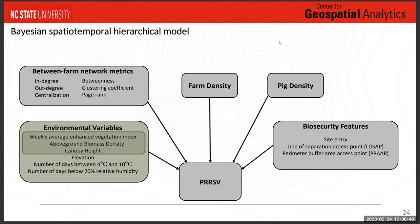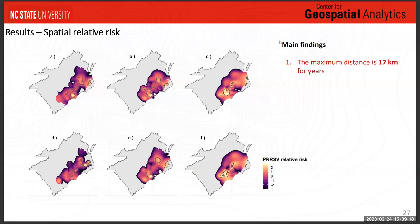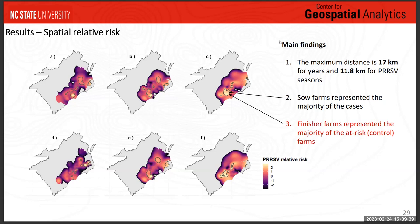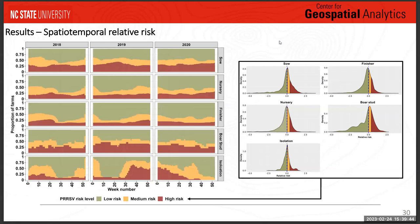Here are the results for the spatial relative risk. We are looking at relative risk surfaces for our study area, going from low relative risk in the dark colors to high relative risk in the brighter colors. Gray-bordered areas represent significant risk areas. Major findings: the maximum distance for local transmission is 17 kilometers for all years in our study. Within areas of significant high risk, sow farms represented the majority of cases, and finisher farms were the at-risk population — the controls in those areas.